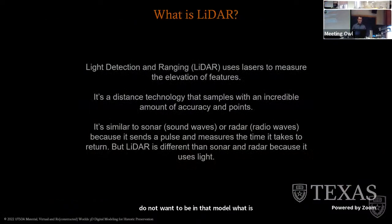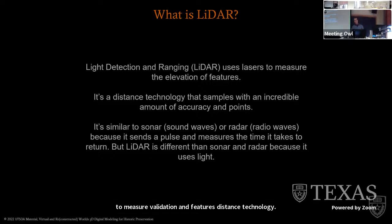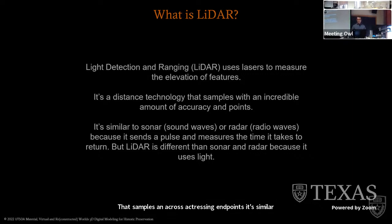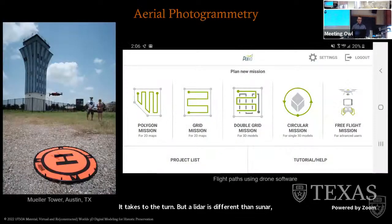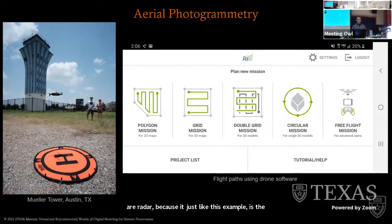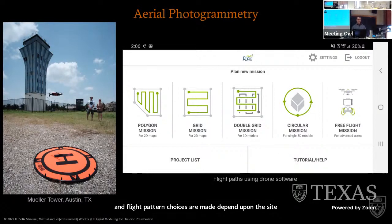LIDAR is light detection and ranging — using lasers to measure elevation and features. It's a distance technology that samples with incredible accuracy and point density. It's similar to sonar or radar in that it sends a pulse and measures the time it takes to return, but LIDAR is different because it uses light. For aerial photogrammetry using a drone, flight pattern choices are made depending upon the site and features of interest.